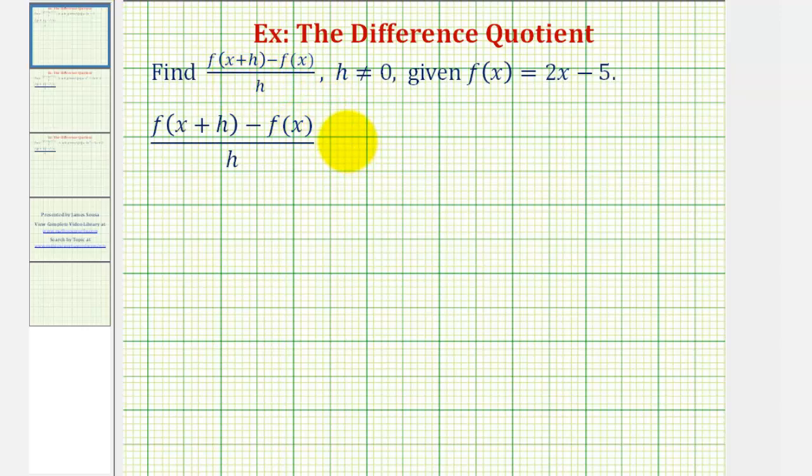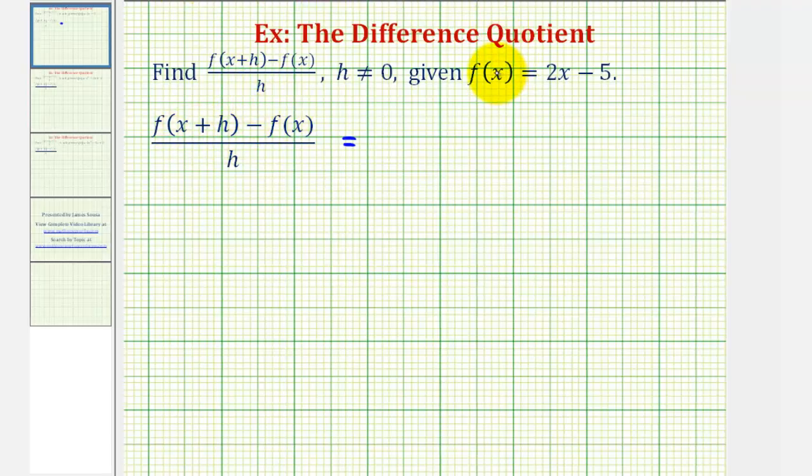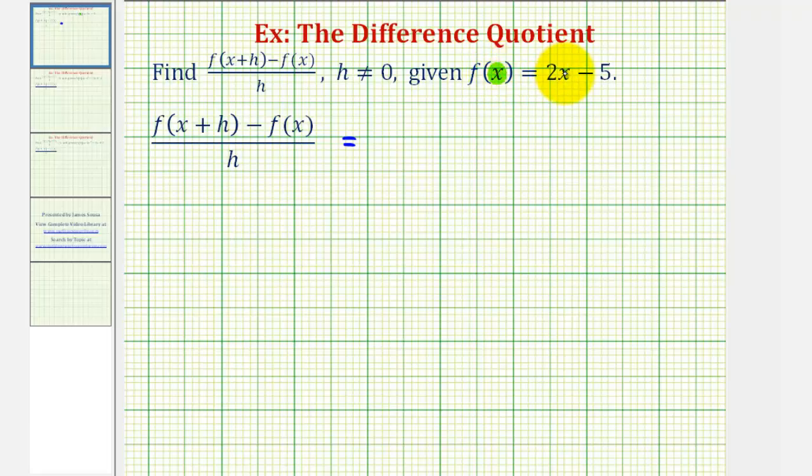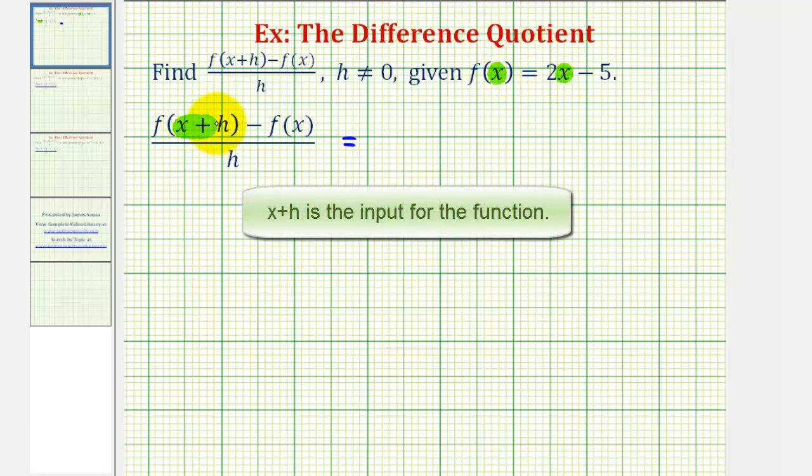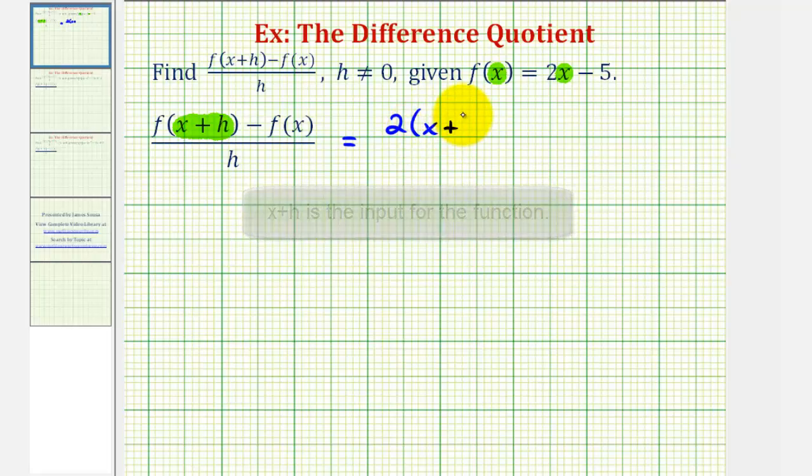So to start, we want to find f of the quantity x plus h, which means for our function f, we're going to substitute the quantity x plus h for x. So we would have two times the quantity x plus h minus five. So all of this is f of the quantity x plus h.